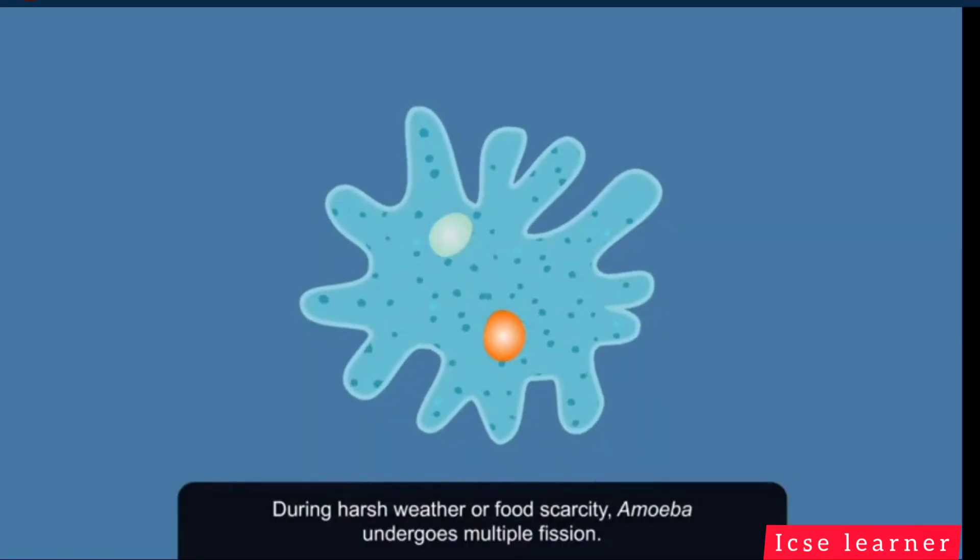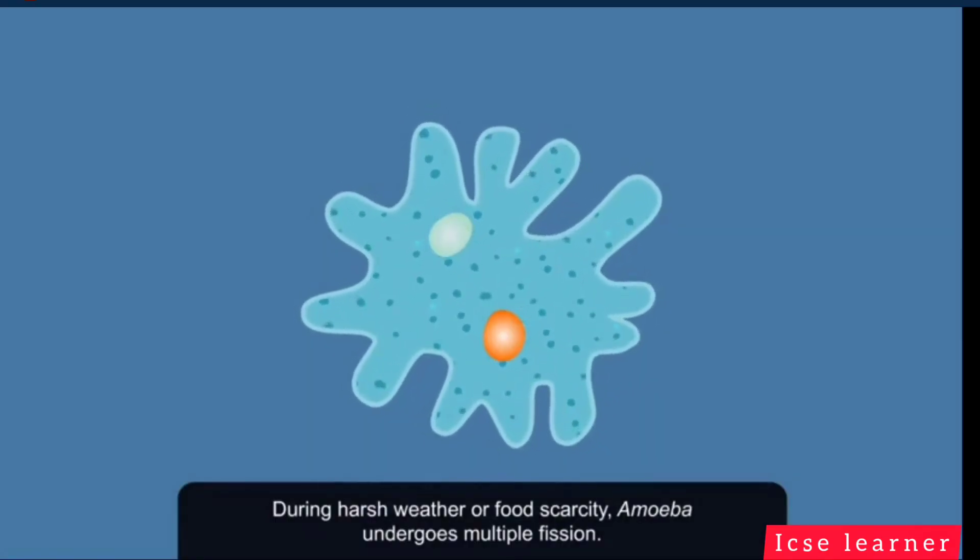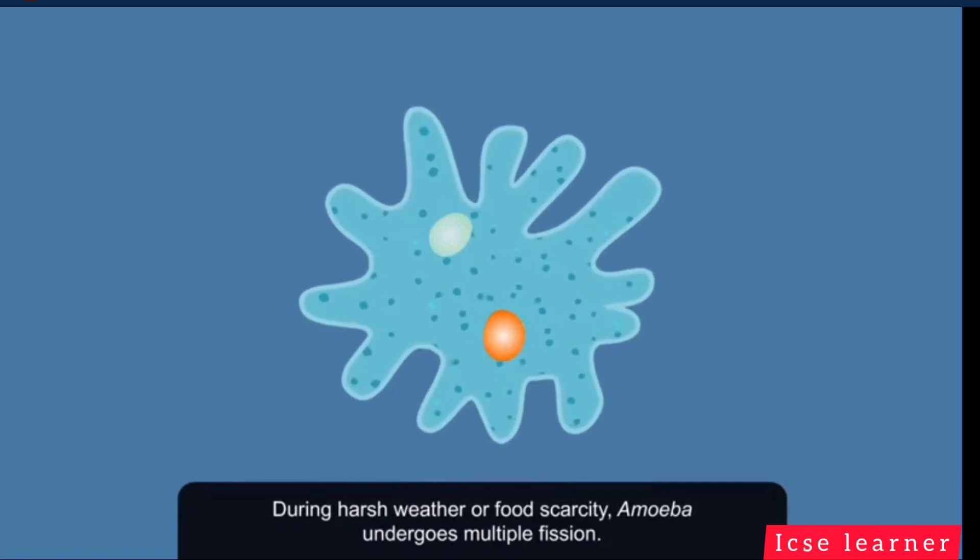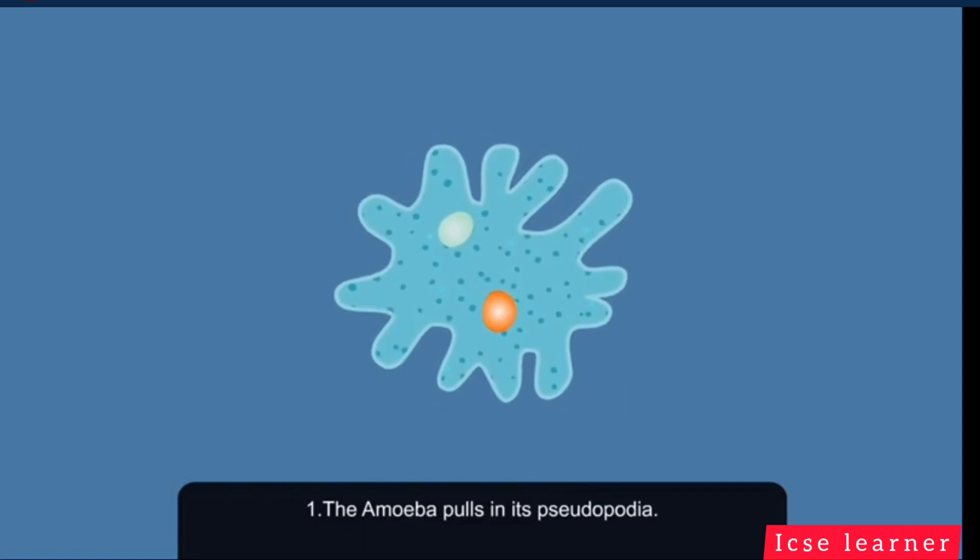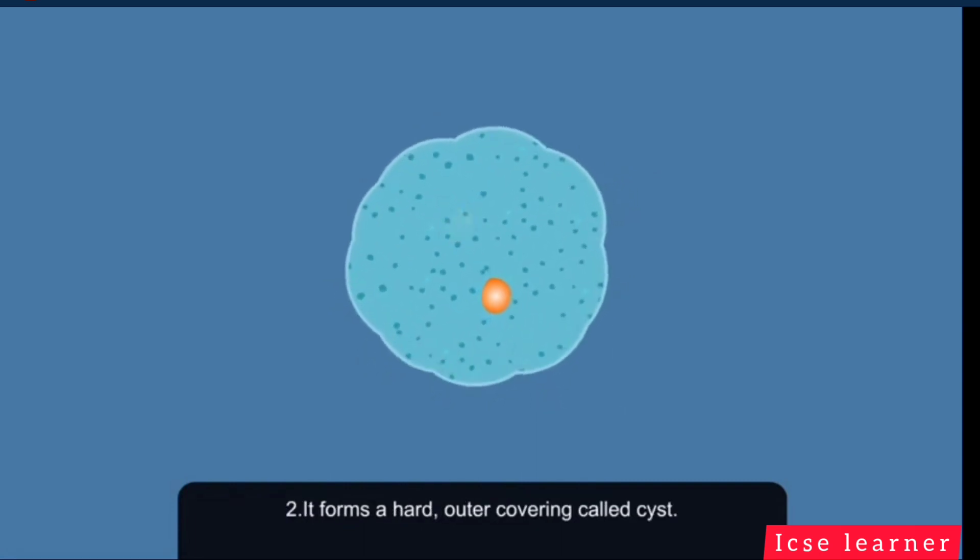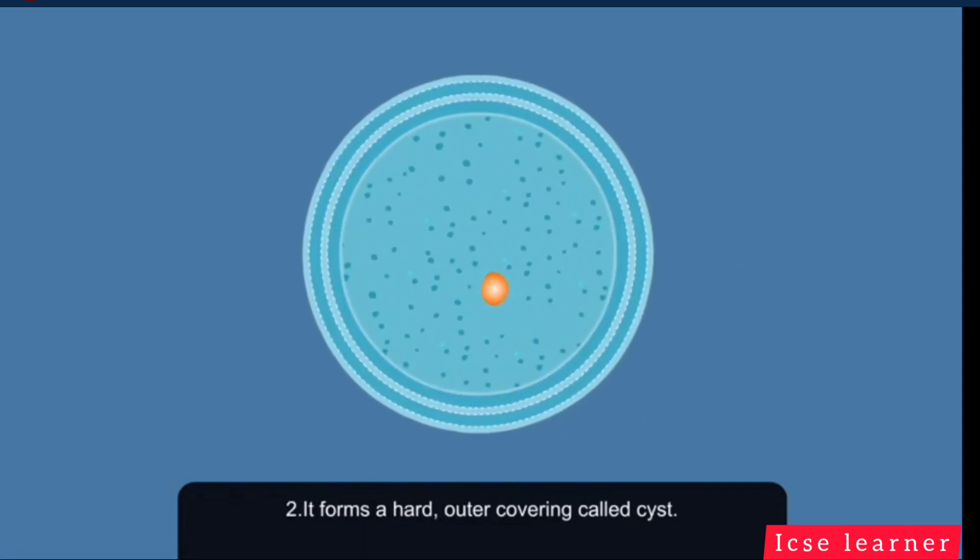During harsh weather or food scarcity, amoeba reproduces by multiple fission. In this method, the amoeba pulls in its pseudopodia. It then forms a hard outer covering called cyst.